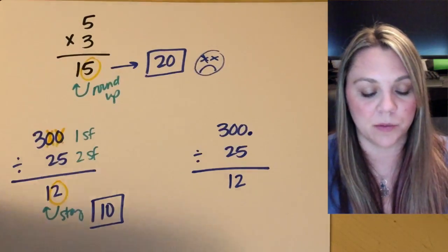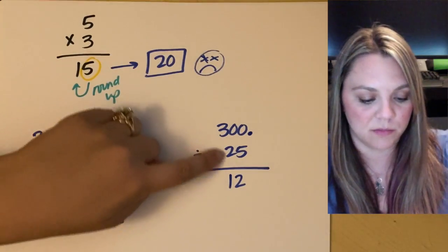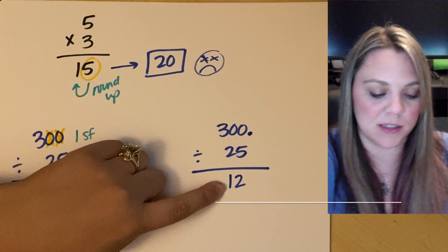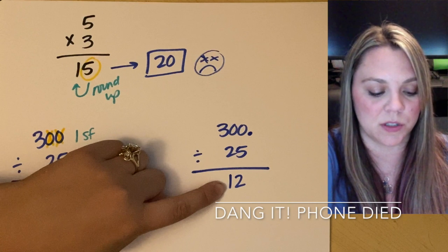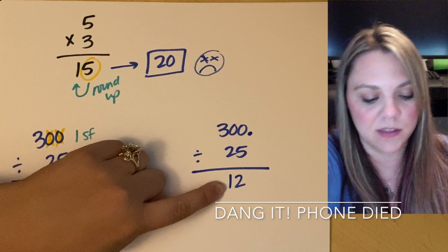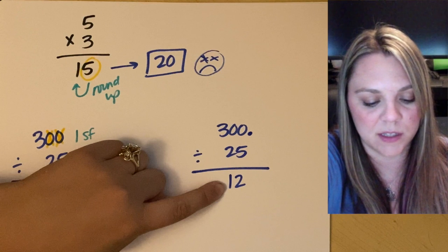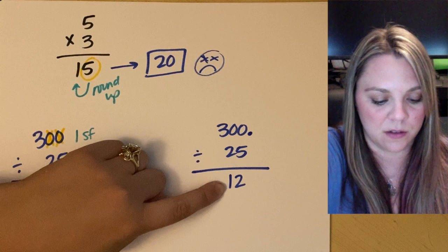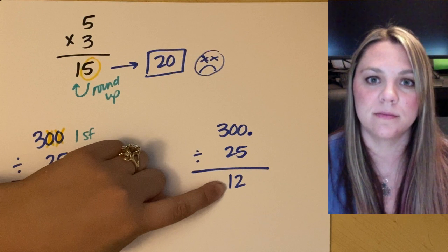Versus here, right? So if I had 300 with a decimal point divided by 25, I would actually still get 12 because in this case, since I have the decimal, this is one, two, three sig figs. This gives me two sig figs. So that means my answer has to have two significant figures. And it does. Hooray.